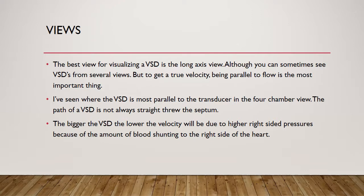I've seen where a VSD is most parallel to the transducer in the four-chamber view, which does happen occasionally, because the path of the VSD is not always straight through the septum — it can go on an angle. There can be multiple VSDs too. They call that the Swiss cheese effect. We do see that occasionally, where there'll be two or three small VSDs in the muscular septum.